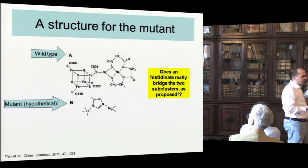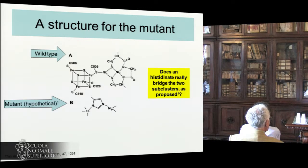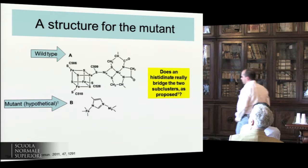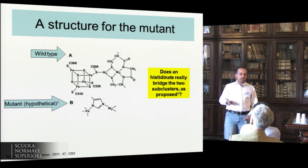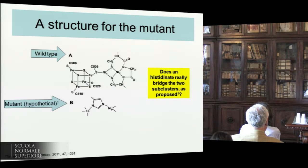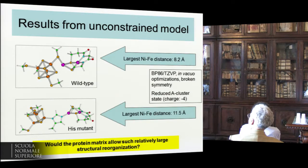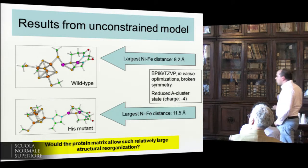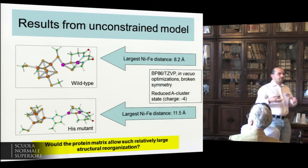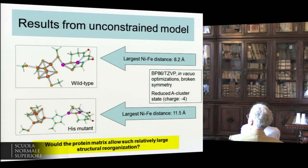Right now, this mutational study is three years old, and even if the authors have been promising a crystallographic analysis of the protein, they are probably having problems to crystallize it. Proteins are nasty systems in which it's not always easy to crystallize, even after a single mutation of a residue. So the first step we took was to consider an isolated model of the active site and have a look at the conformational reorganization of the A-cluster.